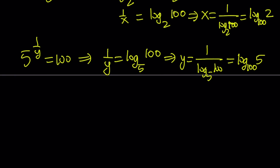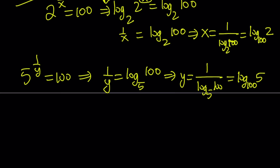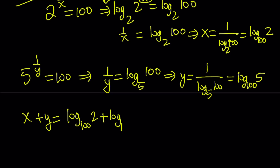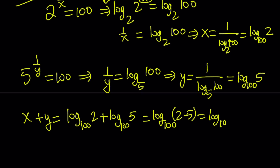So we have x equals log base 100 of 2 and y equals log base 100 of 5. We can go ahead and add them since we're looking for x plus y. That's going to be log base 100 of 2 plus log base 100 of 5. Using the property that adding two logs gives the log of a product, we can write this as log base 100 of 2 times 5, which is 10.